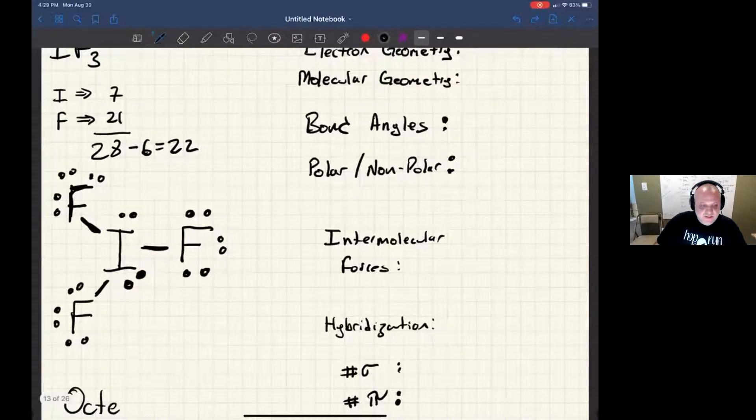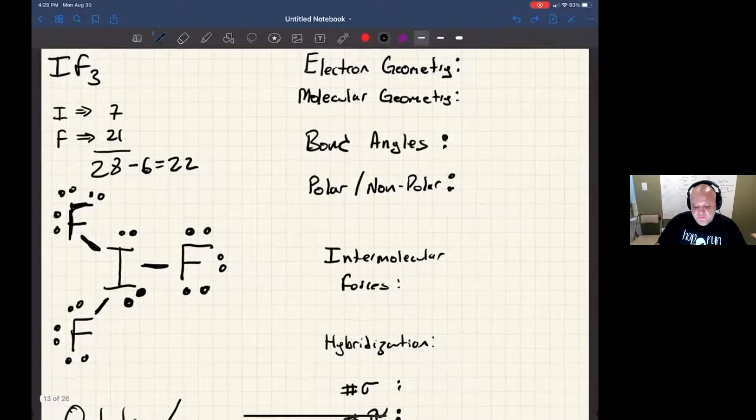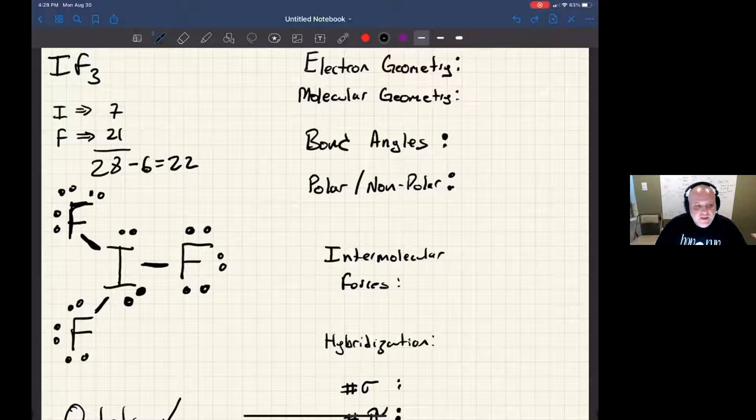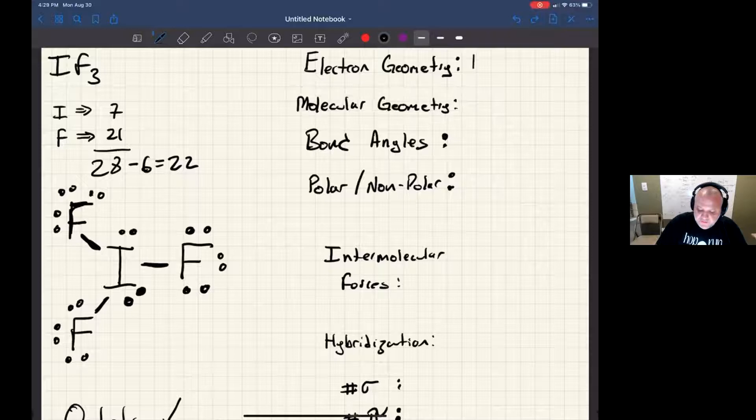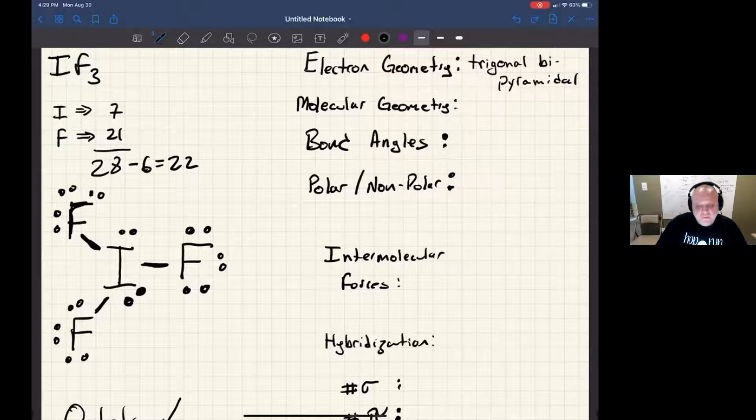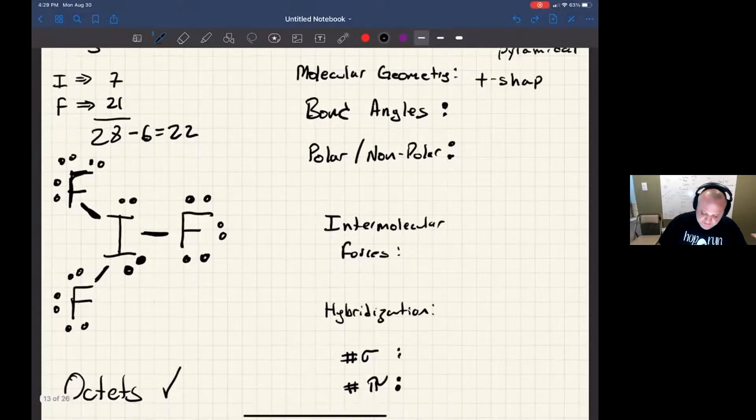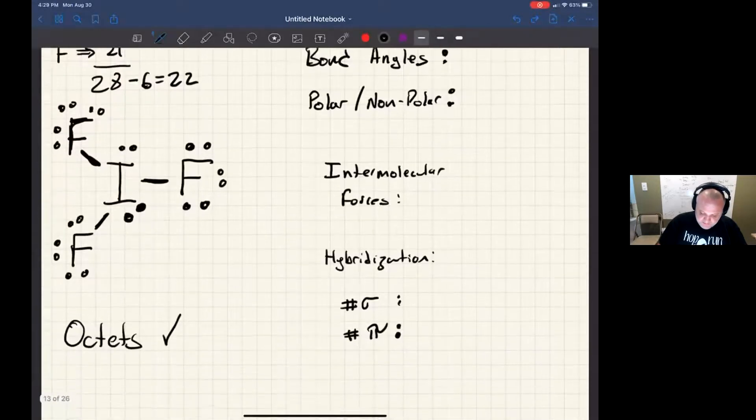All right, so if we were to count up the number of geometry groups for the electron geometry, I've got two lone pairs plus three bonds to fluorine. That's five electron groups, and five electron groups means trigonal bipyramidal geometry. For the molecular geometry, I have two lone pairs in that trigonal bipyramidal geometry, so that ends up being something called t-shaped.